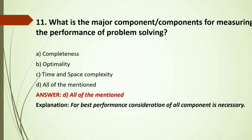MCQ: What are the major components for measuring the performance of problem solving? Options: A) Completeness; B) Optimality; C) Time and space complexity; D) All of the mentioned. The solution should be complete and optimal, and it must also consider time complexity so it doesn't take too long to run. Answer: All of the mentioned.